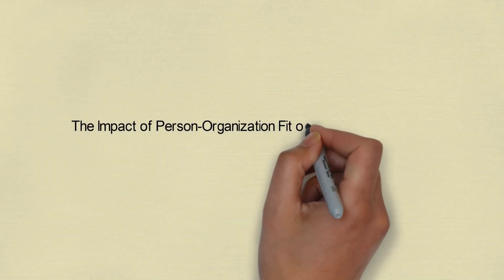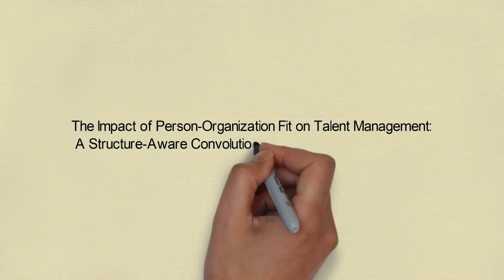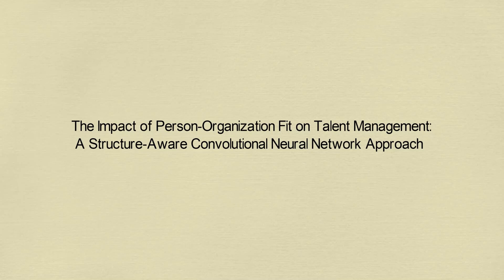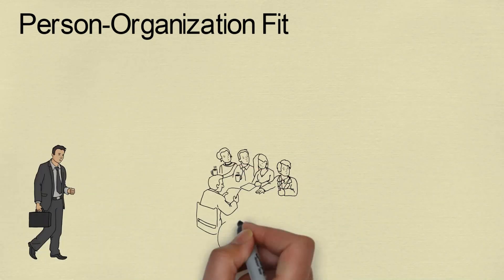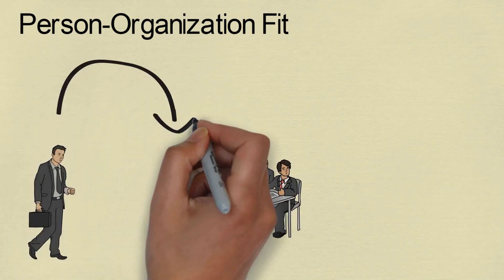The impact of person-organization fit on talent management: a structure-aware convolutional neural network approach. Person-organization fit refers to the compatibility between employees and their organizations.